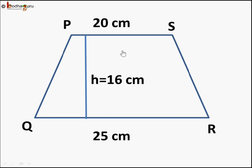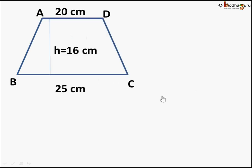Let's take an example. Here is a trapezium given with two parallel sides PS and QR. The length of PS is 20 cm. The length of QR is 25 cm. And the height of trapezium is 16 cm. So what will be its area?